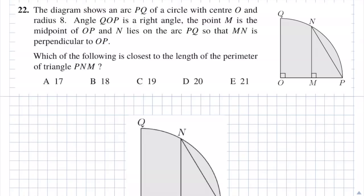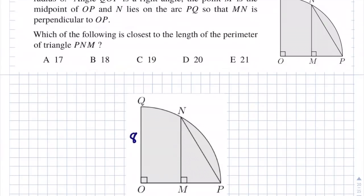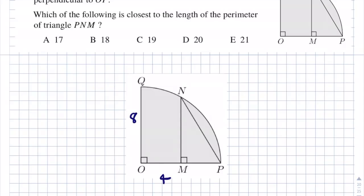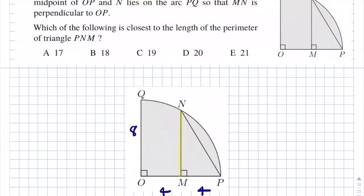Let's annotate this diagram. We're told the arc PQ has radius 8, so OQ = 8. M is the midpoint of OP, so OM = 4 and MP = 4. We need the perimeter of triangle PMN. If I draw a line from O to N, then ON is the radius, so it has length 8.